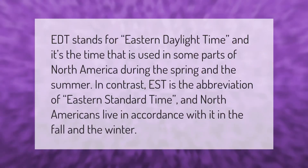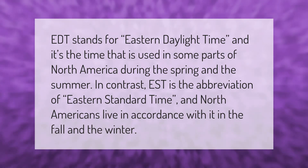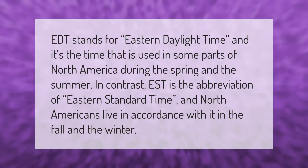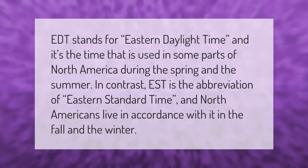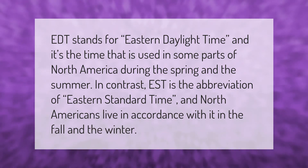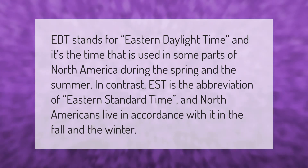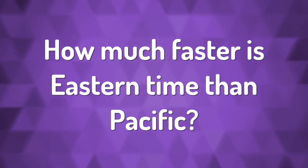EDT stands for Eastern Daylight Time and it's the time used in some parts of North America during the spring and summer. In contrast, EST is the abbreviation for Eastern Standard Time, and North Americans live in accordance with it in the fall and winter.